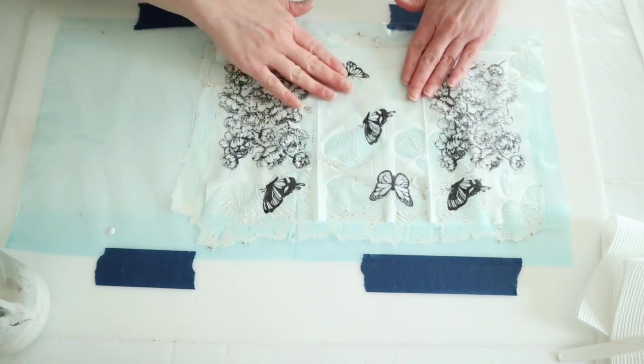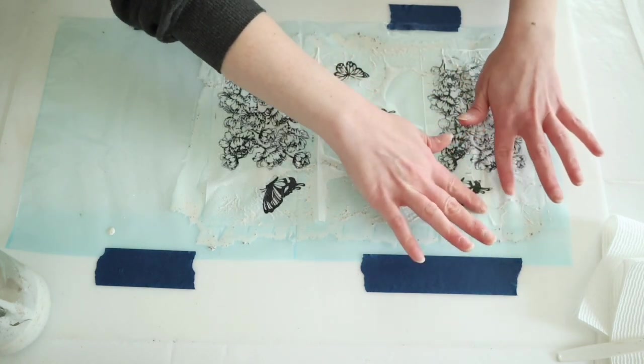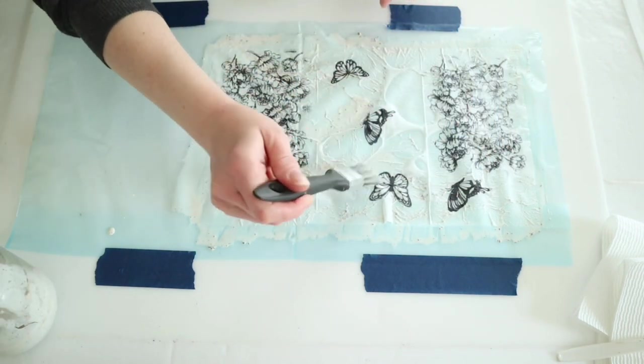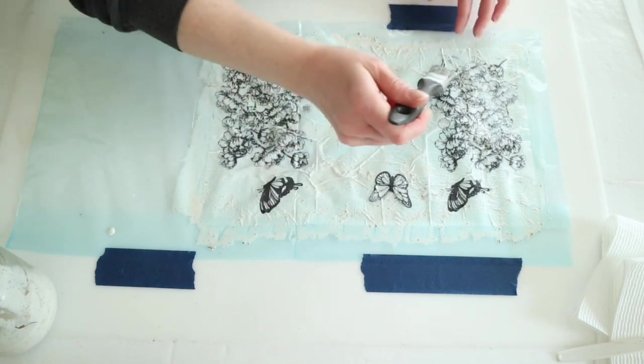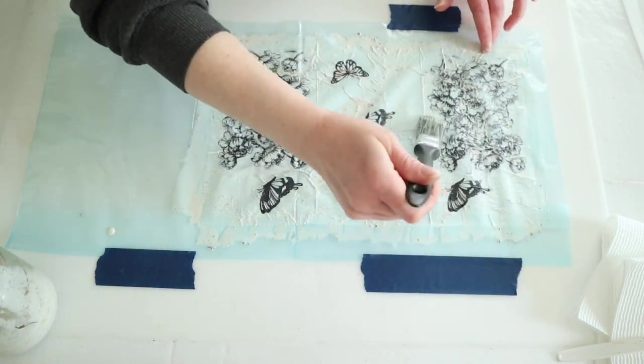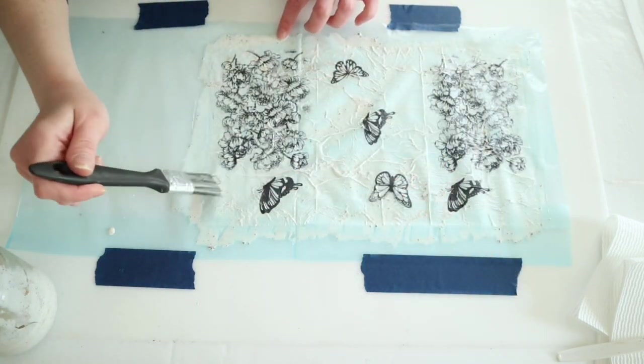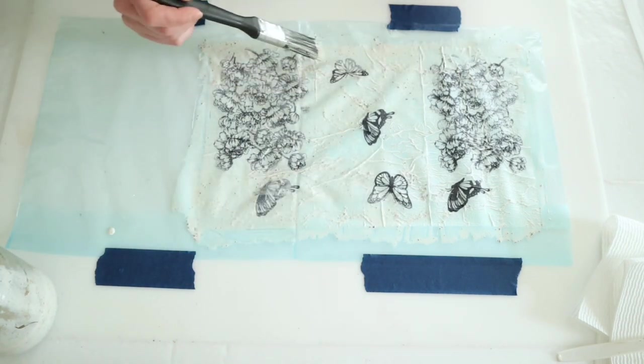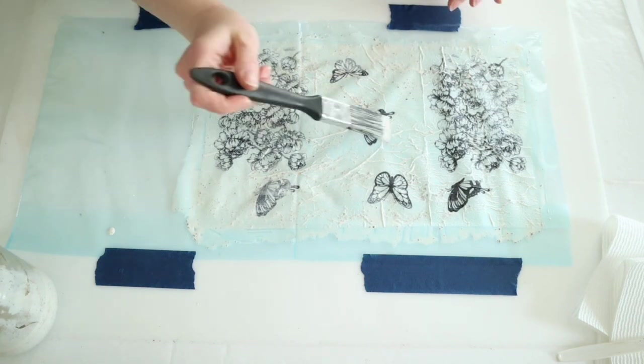Once I have the Mod Podge mixture down, I'm very carefully placing my napkin onto there. There's going to be wrinkles and air bubbles—try to press out the air bubbles as best you can, but as far as the wrinkles go, it's going to have wrinkles because of that plastic under it. Once it's laid down and I've brushed out all the bubbles, I'm going back over top very gently with another layer of that Mod Podge and coffee mixture.